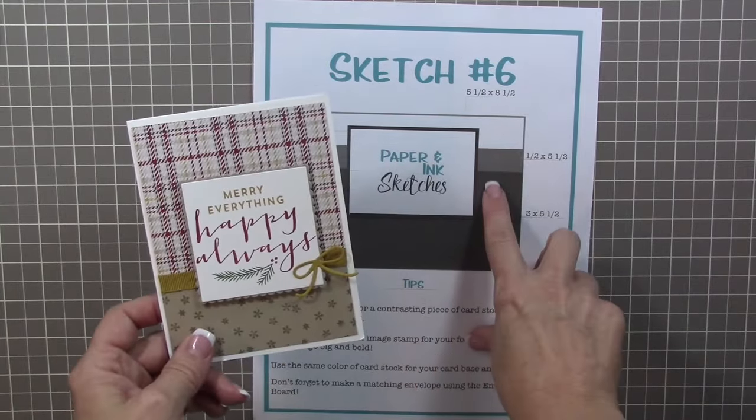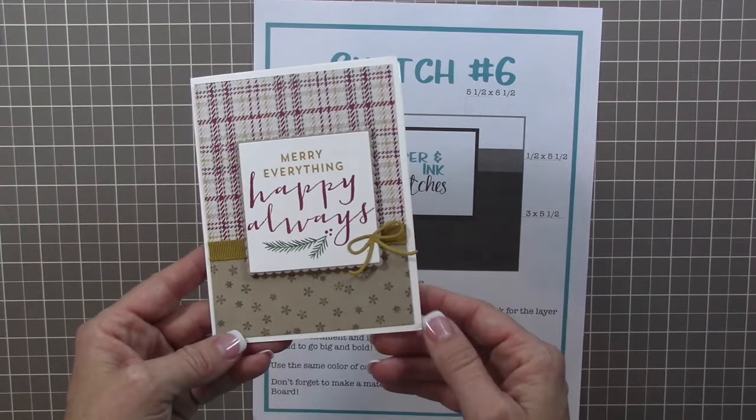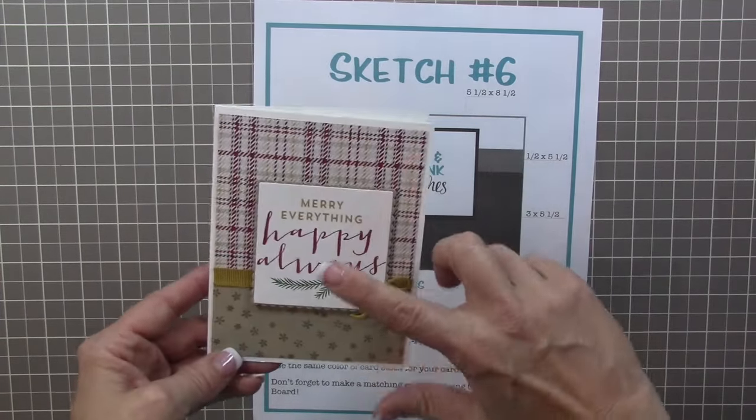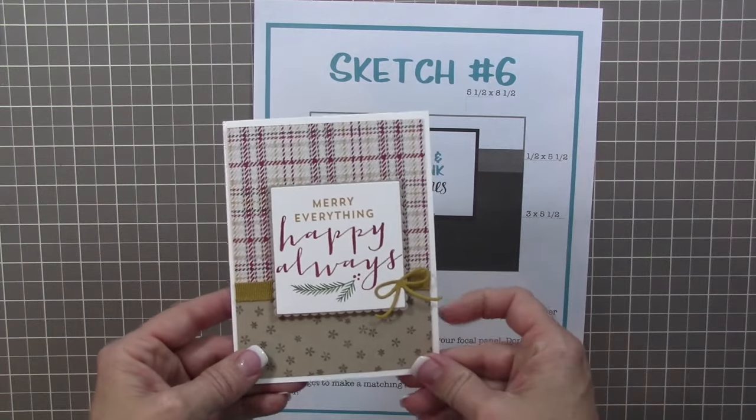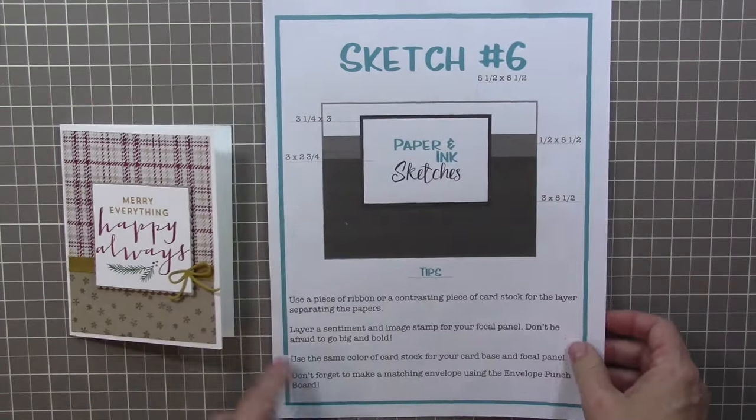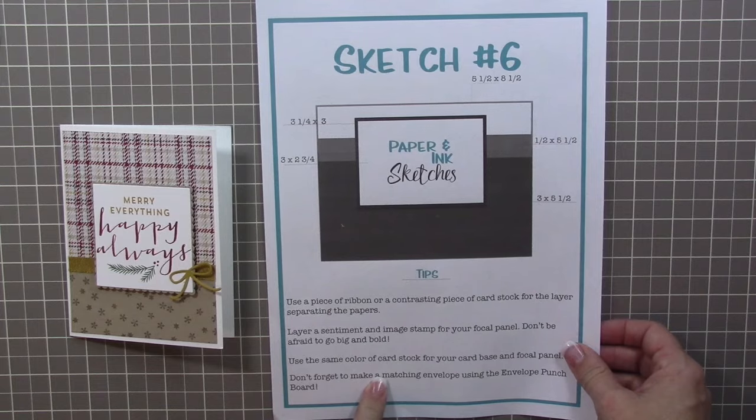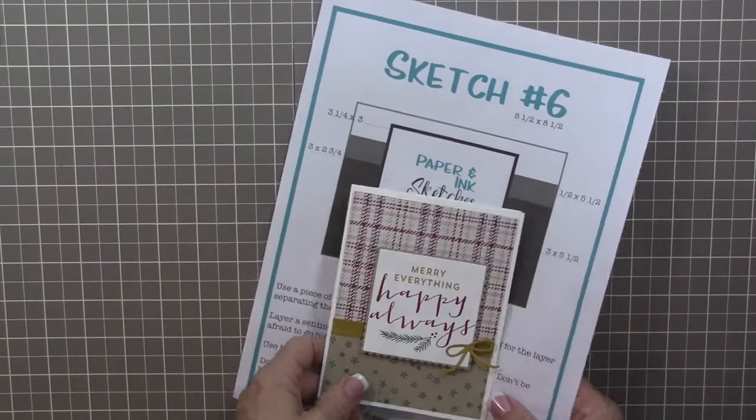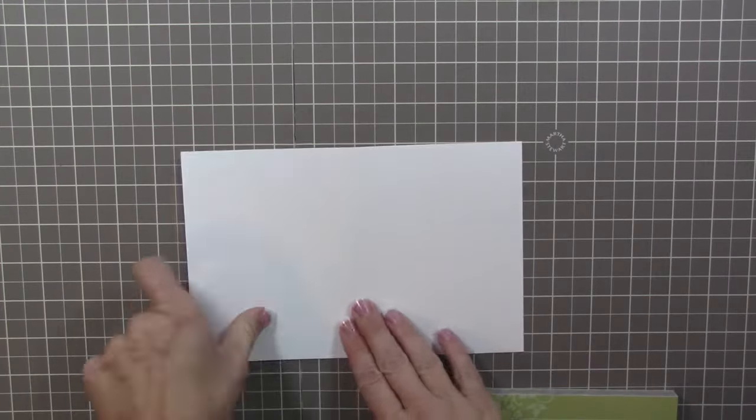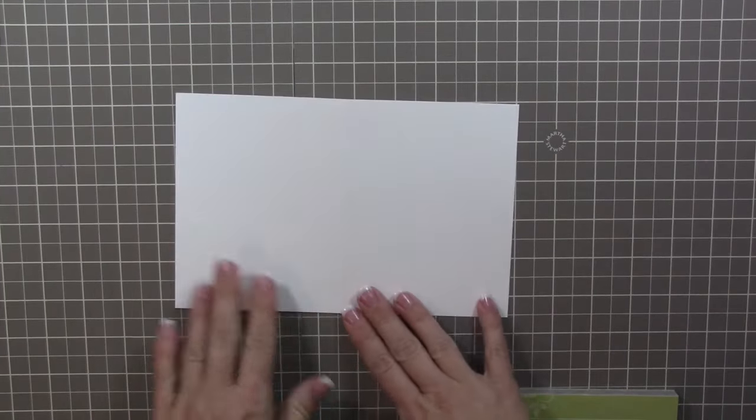Here you can see that I have switched up the orientation of the card, which is great because that's what sketches are all about. You just take that, get an idea, and then you can change it up to however you want it to be. You see here that I've made a Christmas card. This is more of a masculine Christmas card, which I'm excited to show you.